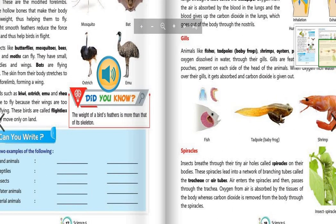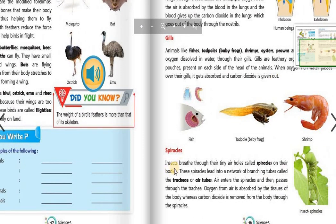Now let's move forward. Spiracles. Insects breathe through tiny air holes called spiracles on their bodies. These spiracles lead into a network of branching tubes called the trachea or air tubes. Air enters the spiracles and then passes through the trachea. Oxygen from air is absorbed by the tissue of the body and carbon dioxide is removed from the body through the spiracles.